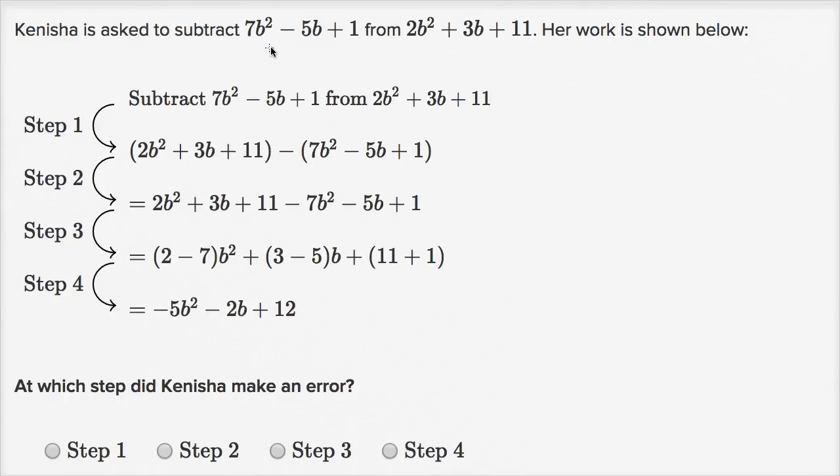Kanisha is asked to subtract 7b squared minus 5b plus one from 2b squared plus 3b plus 11. Her work is shown below, and we see all the steps that she took. And then they said, which step did Kanisha make an error?